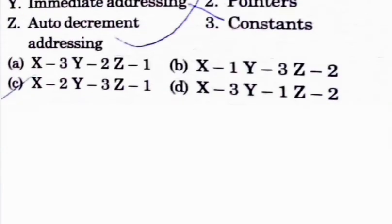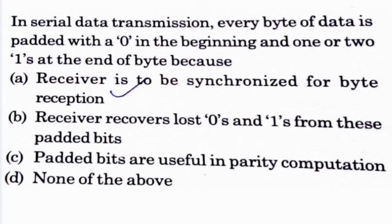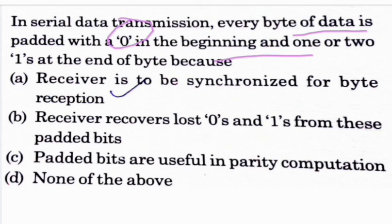Next question: in serial data transmission, every byte of data is padded with a zero at the beginning and one or more ones at the end of the byte, because — option A: the receiver is to be synchronized for byte reception, option B: the receiver recovers lost zeros and ones from these padded bits, option C: padded bits are used in parity computation, option D: none of the above. Option A is correct — the receiver needs to be synchronized for byte reception.